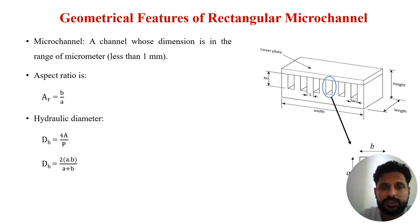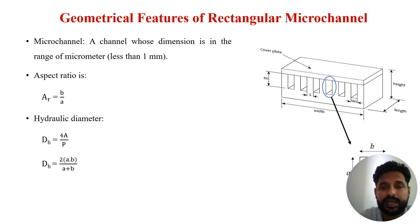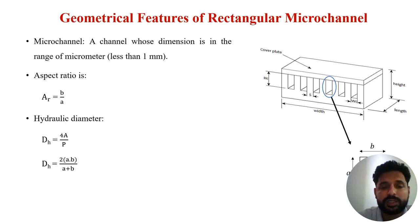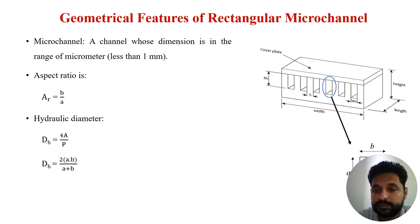Regarding geometrical features of rectangular micro channels, various classifications exist, but in general a channel with hydraulic diameter less than or equal to 1 mm is considered a micro channel. The two main parameters are aspect ratio and hydraulic diameter. Aspect ratio is defined as the ratio of channel width to its depth, and hydraulic diameter is four times the cross-sectional area divided by its perimeter, further expressible in terms of channel height and width. The figure shows the cross-section with all dimensional parameters including channel height, width, total section height, and length.